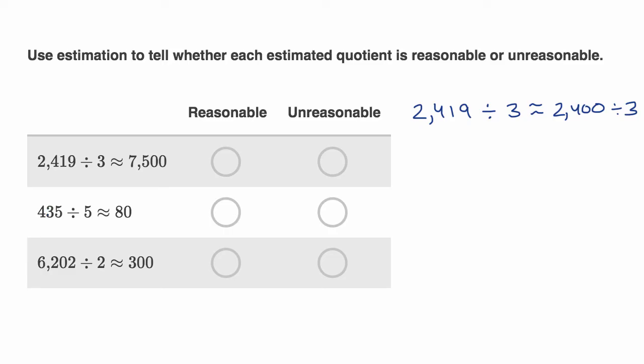All I did is I said, hey, 2,419 for estimation purposes, let's just say it's roughly equal to 2,400. And then 2,400 is fairly straightforward to divide by three. 24 divided by three is eight, so 2,400 divided by three is 800. So this is going to be 800.